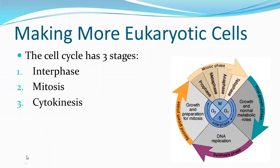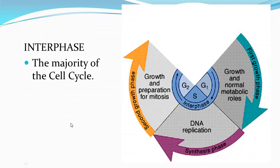How do eukaryotic cells reproduce themselves? That happens during the mitosis stage of the cell cycle. Interphase is the first stage, mitosis is the second stage, and cytokinesis is the last stage. As you can see, the cell spends most of its time in interphase — three-quarters of the cell cycle is spent there.